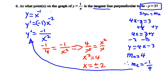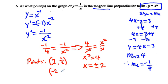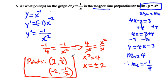We now have two x-coordinates. Plugging x = 2 into y = 1/x gives y = 1/2, and x = -2 gives y = -1/2. So the two points where the tangent line is perpendicular to 4x - y = 3 are (2, 1/2) and (-2, -1/2). I hope these problems have helped you, and thank you for watching.